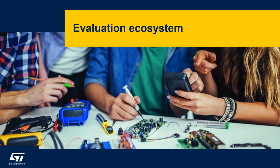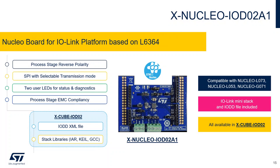ST offers a rich portfolio of hardware and software tools to accelerate and simplify design and development of smart applications. Let's get an overview of our evaluation ecosystem for IO-Link. Like with any other ST product for factory automation, our newest dual-channel IO-Link device comes with a full set of prototyping tools including an X-Nucleo Expansion Board, STM32Cube-based firmware library and complete documentation. The brand new X-Nucleo IO-D02A1 with SPI, reverse polarity protection and two LEDs can be used as a reference for evaluation and application PCB design with the L6364. The associated firmware package X-Cube IO-D02 includes the IO-Link Ministack and an IO-DD XML file to operate with IO-Link Masters.